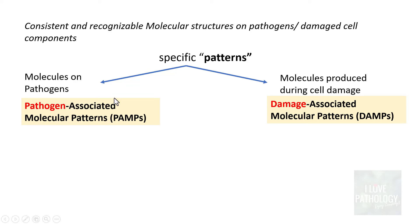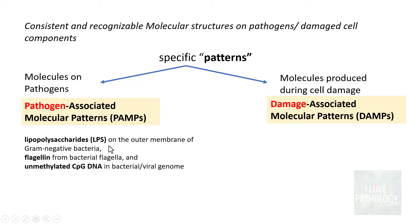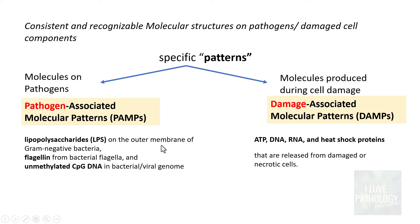Examples of pathogen-associated molecular patterns include lipopolysaccharides on the outer membrane of bacilli, particularly gram-negative bacilli; flagellin from bacterial flagella; and unmethylated CpG DNA sequences in bacterial or viral genomes. Examples of damage-associated molecular patterns include substances released by damaged cells such as ATP, DNA, RNA, and heat shock proteins — all recognized as damage patterns.